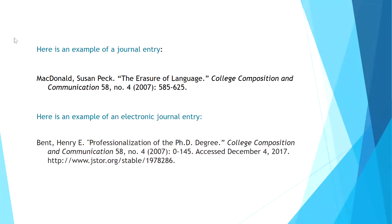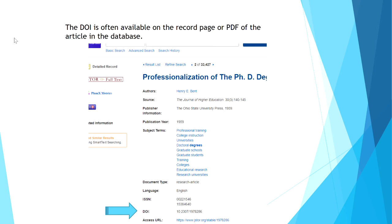Here is an example of a journal entry and also of an electronic journal entry. The print and electronic journal entries mainly differ in that the e-journals will include the access date and the DOI, which is the digital object identifier, or URL. The DOI is preferred if available. The DOI is often available on the record page or PDF of the article in the database.